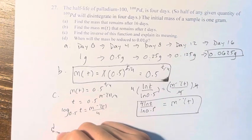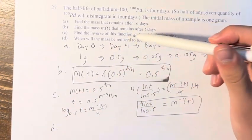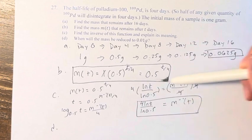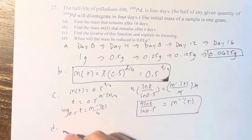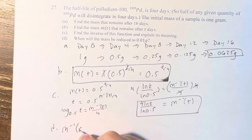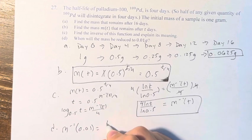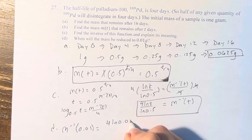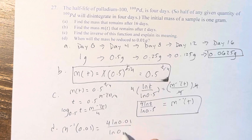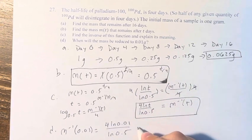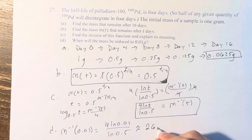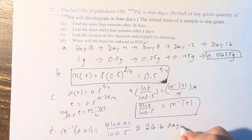So for part d, when we're asked when will the mass be reduced to 0.01 grams, this is time in terms of mass. So if you plug in a mass, we get a time. So m inverse of 0.01 equals 4 times ln(0.01) over ln(0.5). You can put this into your calculator, and you'll get that it happens at roughly 26.6 days.